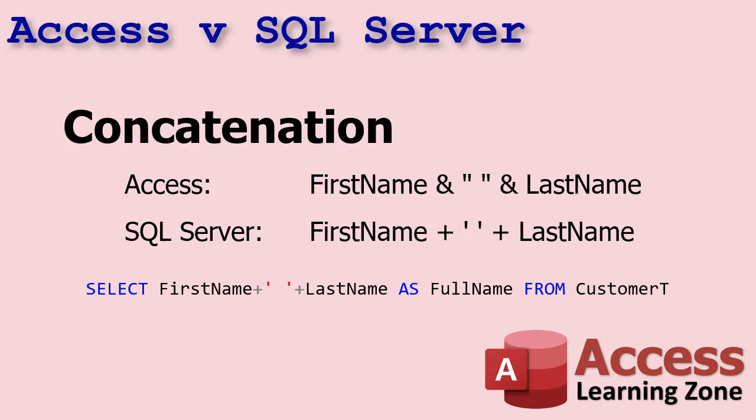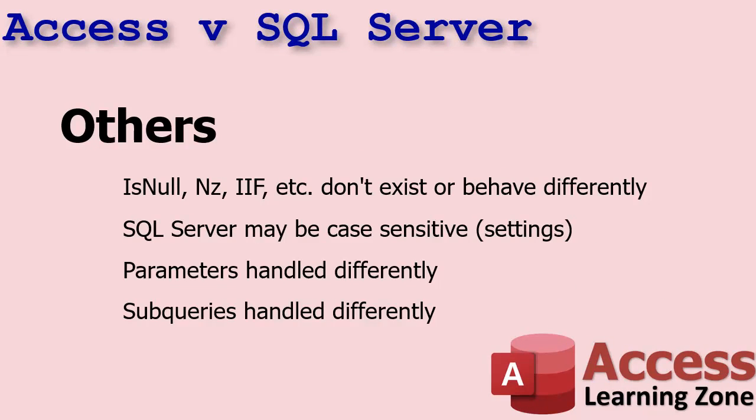Concatenation is different too. If you want to concatenate in your SQL strings, in Access we use ampersands and double quotes, but in SQL Server it's plus signs and single quotes. There are also some other differences I won't go into in full detail here — functions like IsNull and Nz either don't exist or behave a little differently. SQL Server may be case-sensitive based on how your database is set up, and parameters in some queries are also handled slightly differently in SQL Server.